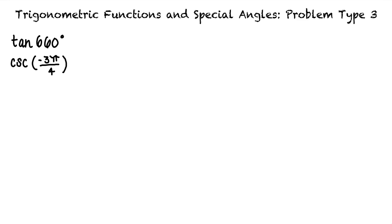First, we'll note that this problem actually contains two parts. We are asked to find the exact value for the tangent of 660 degrees, and secondly, we are asked to find the exact value for the cosecant of negative 3 pi over 4. One deals with degrees and the other deals with radians. This means that we can break this problem up and deal with each question separately.